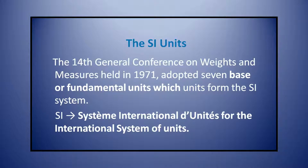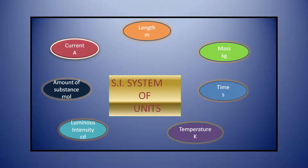SI means Système International — the International System of Units. The SI system has seven fundamental or base units: for mass it is kilogram (kg), for time it is second, for length it is meter, for electric current it is ampere (A), for amount of substance it is mole, for luminous intensity it is candela (cd), and for temperature it is kelvin (K).